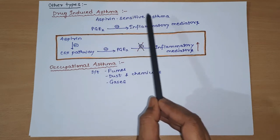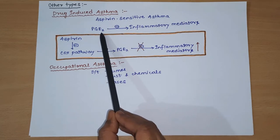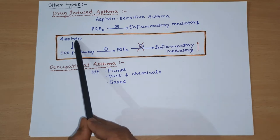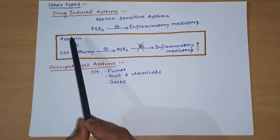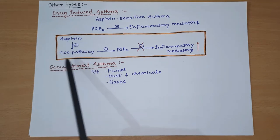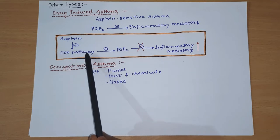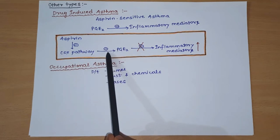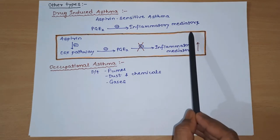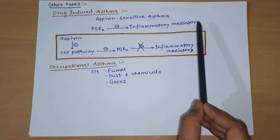The mechanism by which aspirin causes asthma: normally prostaglandin E2 (PGE2) inhibits inflammatory mediators. Aspirin inhibits the cyclo-oxygenase (COX) pathway, which reduces PGE2 synthesis. If PGE2 is not produced, its normal function of inhibiting inflammatory mediators is lost, meaning the inflammatory mediators are no longer inhibited, leading to asthma.